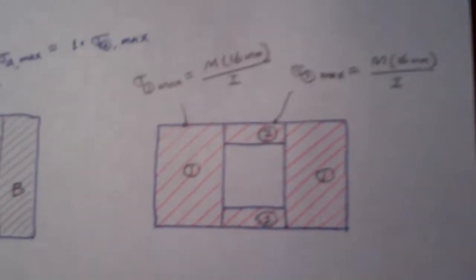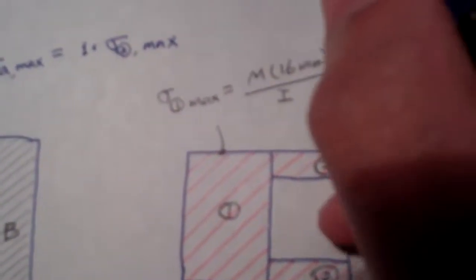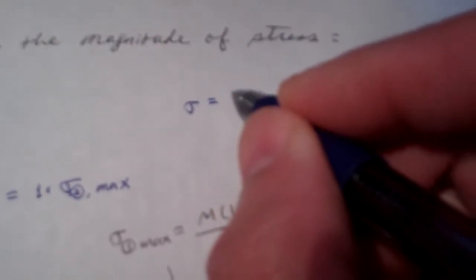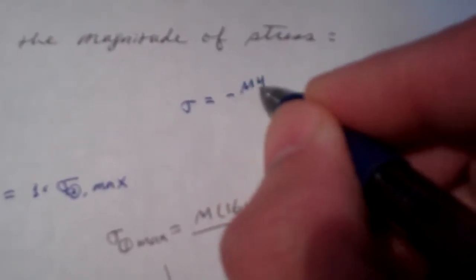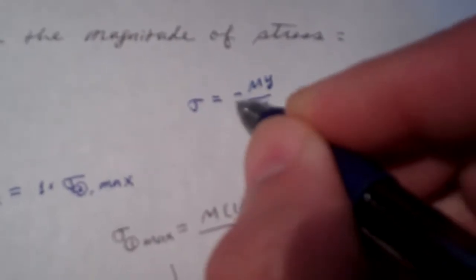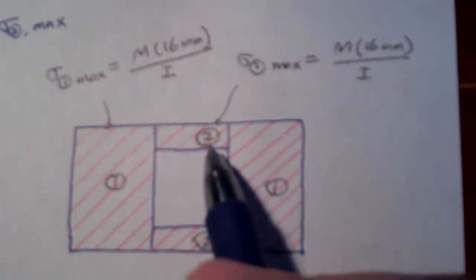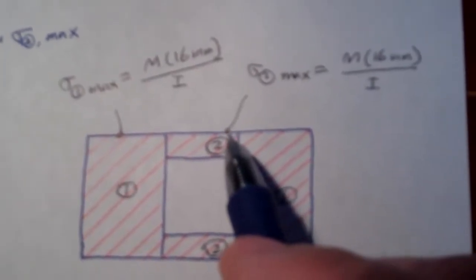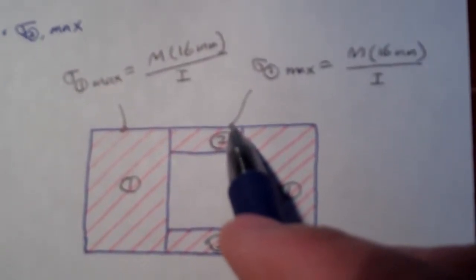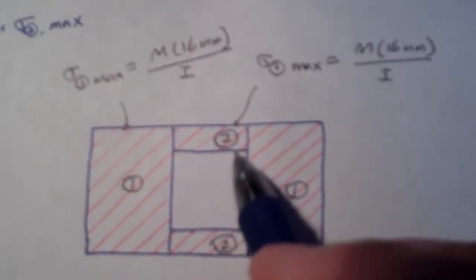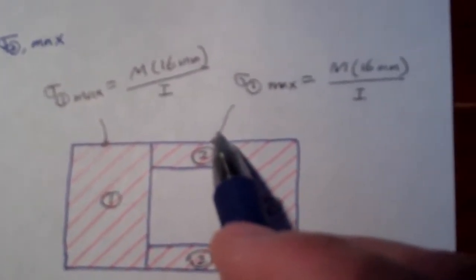Now we look at how to calculate the stress on the transformed cross section. We simply plug in using the formula sigma equals minus my over I. That is our generic formula. And here we focus on the magnitudes only. So here I ignore the minus.